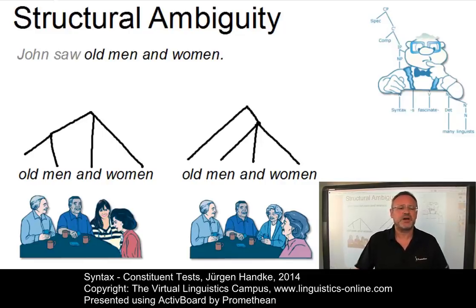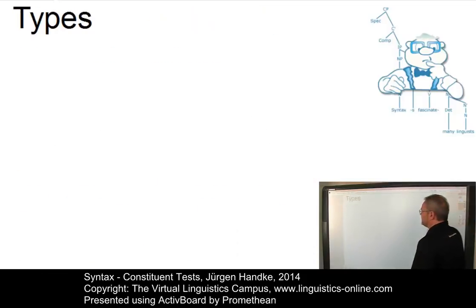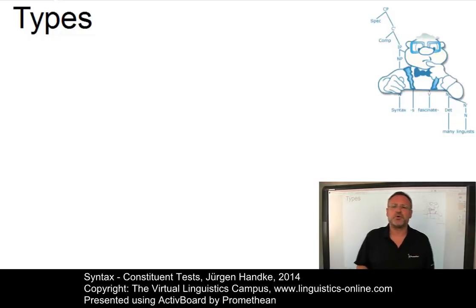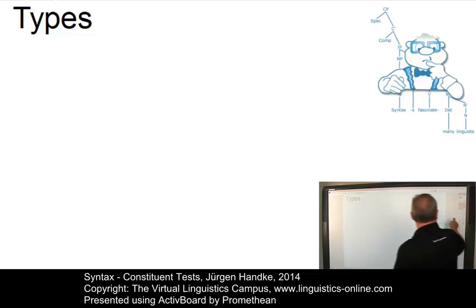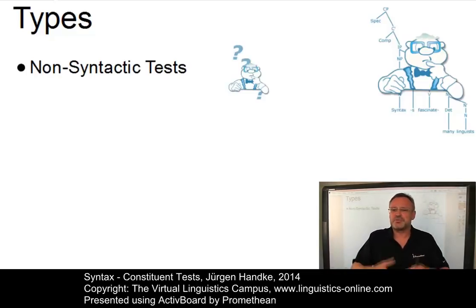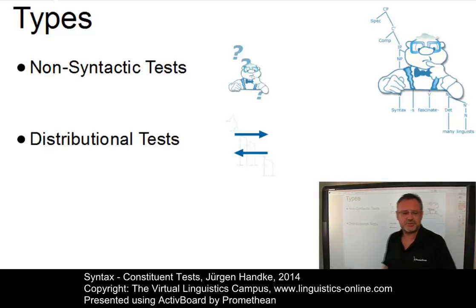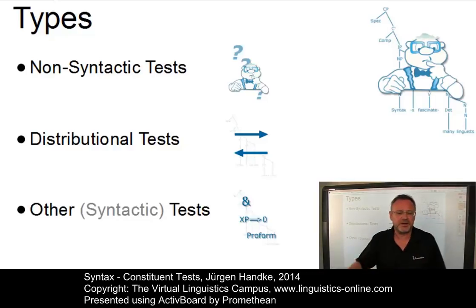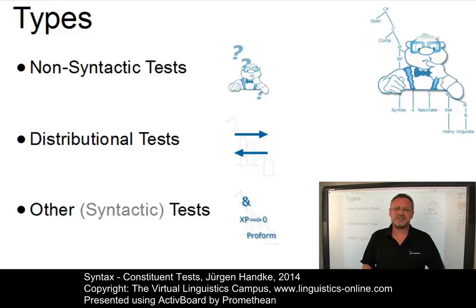But how do we arrive at such constituents? Well, there are several interacting arguments, so-called tests, that lend support to the postulation of constituents. These arguments can be subdivided into non-syntactic arguments or tests, which come primarily from morphology and semantics; distributional tests or distributional arguments, i.e., arguments that consider the distribution of constituents within sentences; and other arguments that apply specific syntactic operations to the constituents in question. Let's take a closer look and start with the non-syntactic arguments.